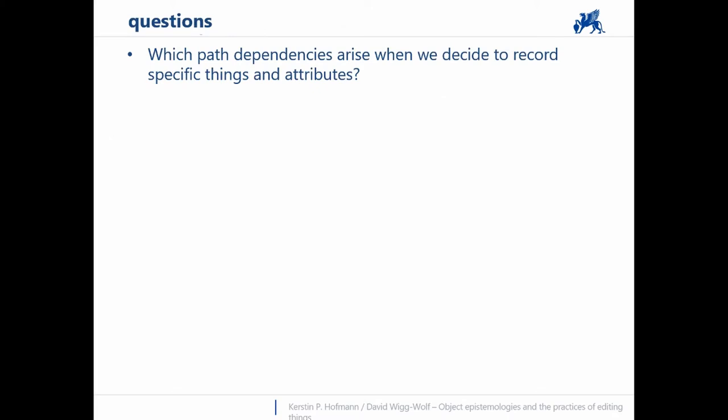Prior to this session in Frankfurt at the Römisch-Germanische Kommission, we have been discussing not only the possibilities but also the challenges of the digital age with colleagues from a variety of disciplines. The following questions repeatedly came up. They have various consequences and will perhaps have a role to play in this session. Which past dependencies arise when we decide to record specific things and describe particular characteristics but do not record others?